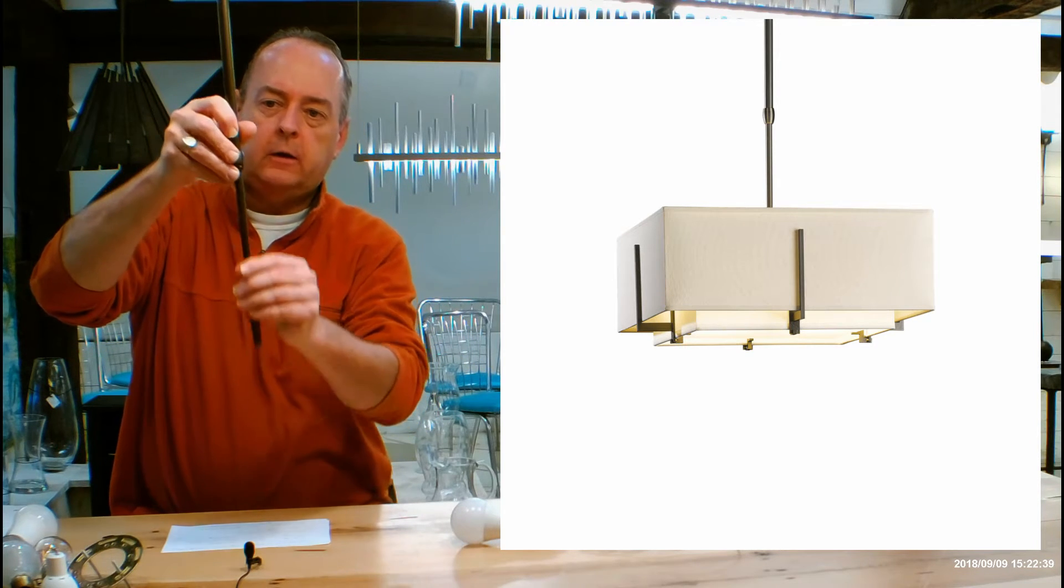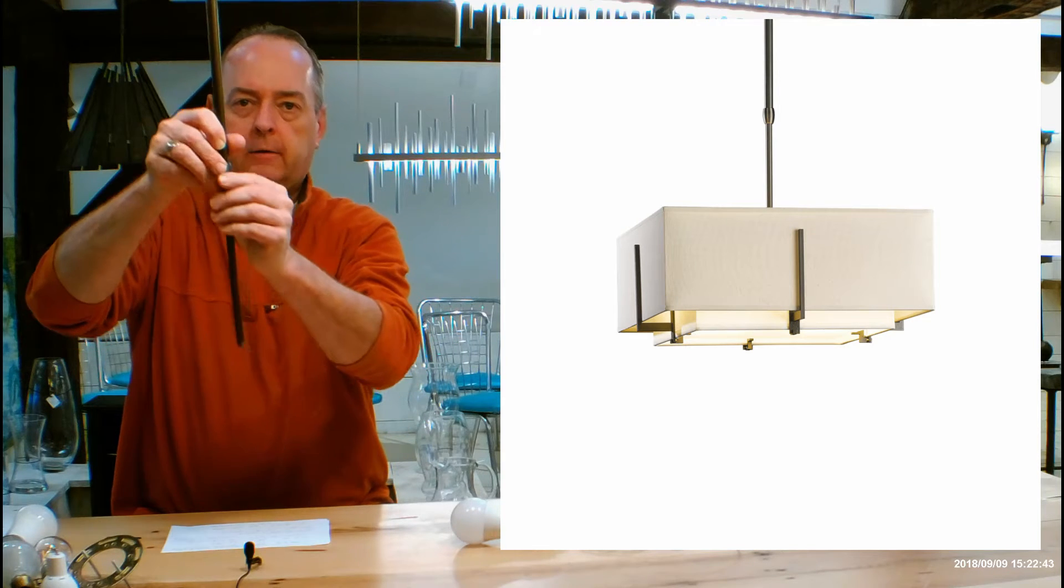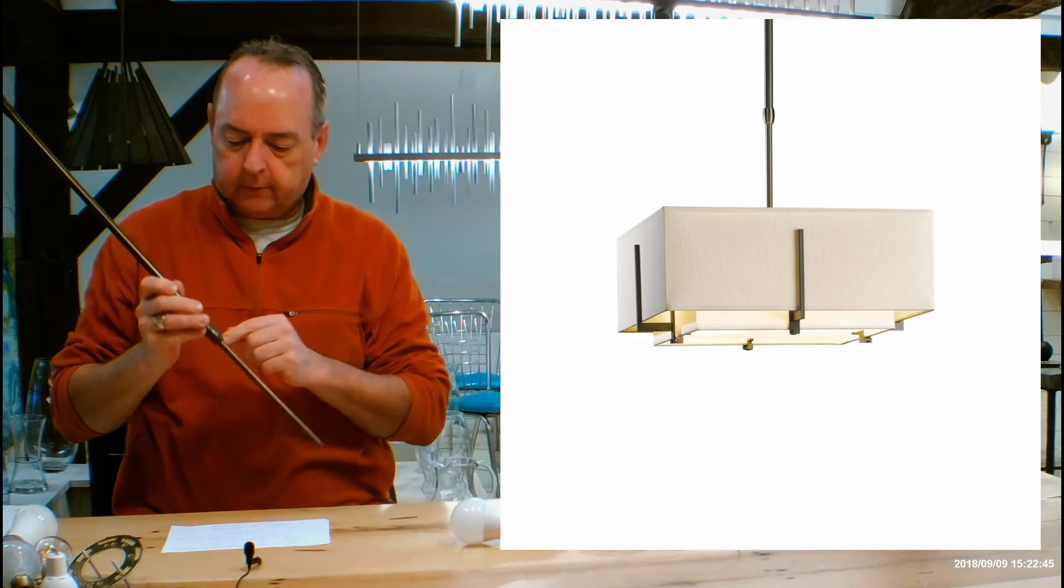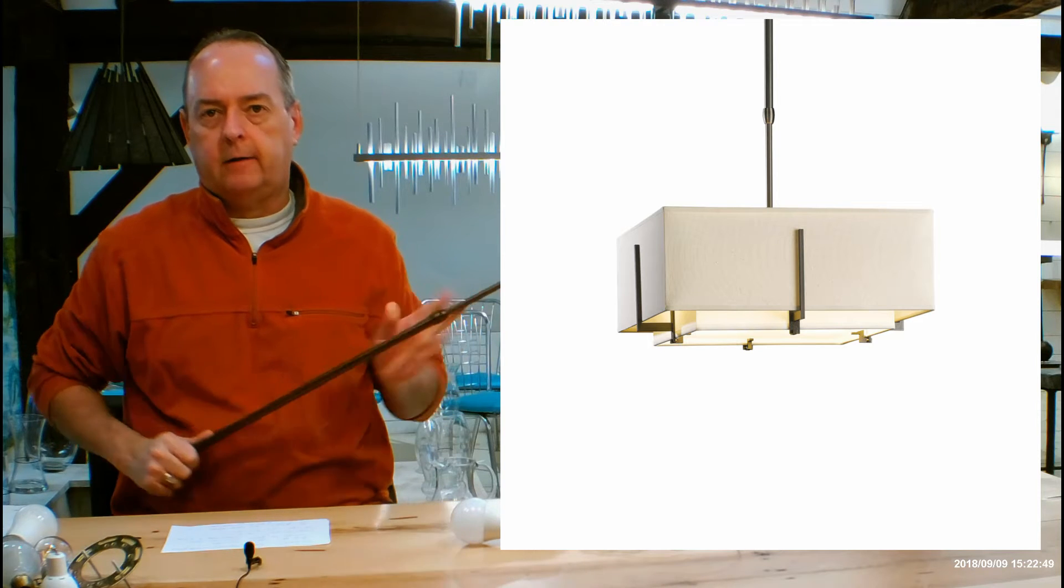After you get that where you want it to be, you tighten that little screw with the little hex wrench and it stops it from going up and down. It's a friction sleeve that's hiding inside of here. So let's go over the overall heights now.